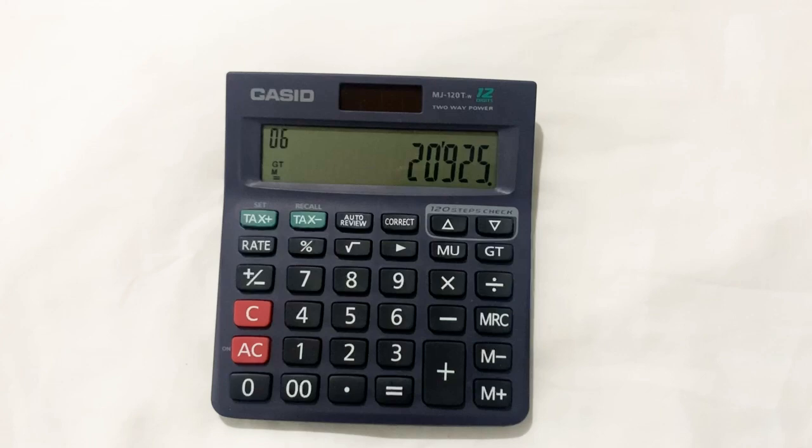This is the final price after 7% off. So this is how you can calculate 7% of any price using your calculator.